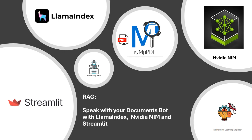Streamlit is an open source framework which allows us to create applications with few lines of code. LlamaIndex is a well-known framework to build applications, more intended to connect different components of generative AI applications — LLMs, embeddings models, vector stores, and APIs or libraries to parse different structured data. NVIDIA NIM is part of the NVIDIA GPU cloud, one of the services provided on NVIDIA AI cloud.